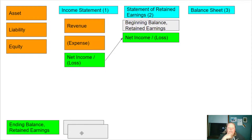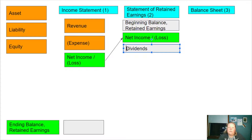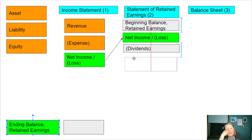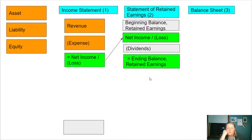Then I subtract any dividends paid, shown in parentheses to indicate subtraction. So: beginning balance plus net income (or minus a loss) minus dividends equals the ending balance in retained earnings. That ending balance in retained earnings will feed into the equity section of the balance sheet.